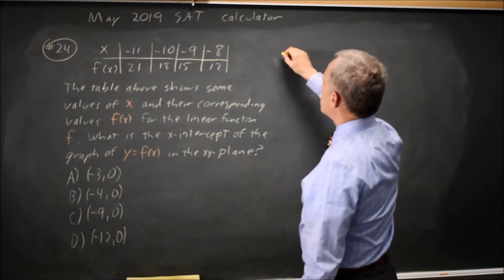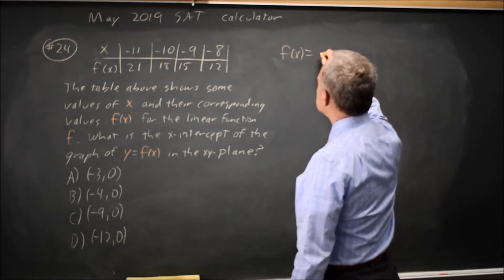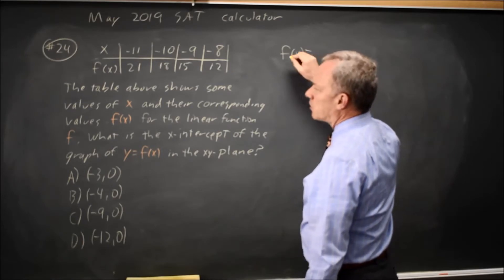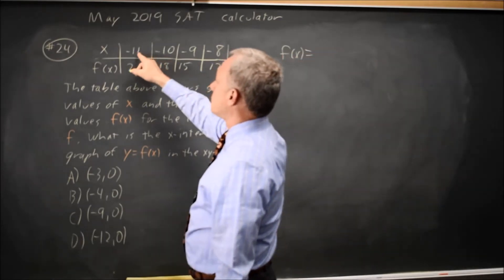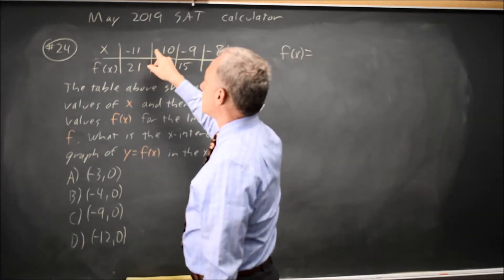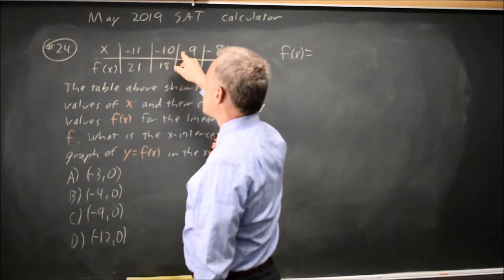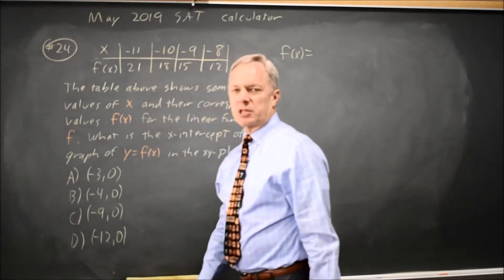I'm going to write the equation for the function f(x) = mx + b, where m is the slope. I see when x goes up by 1 from -11 to -10, or -10 to -9, f(x) is going down by 3.